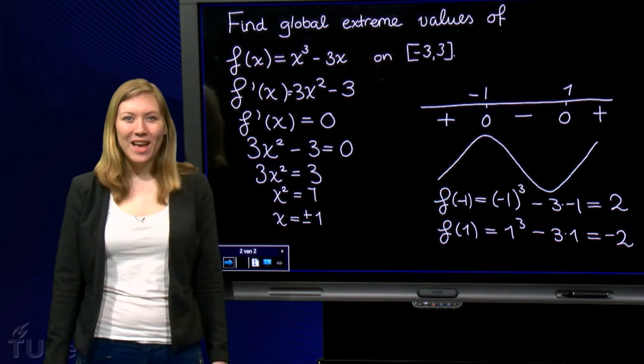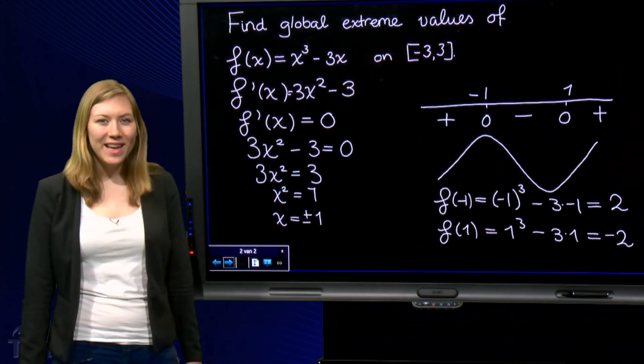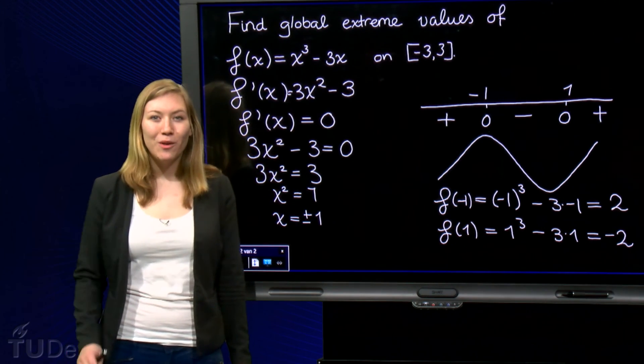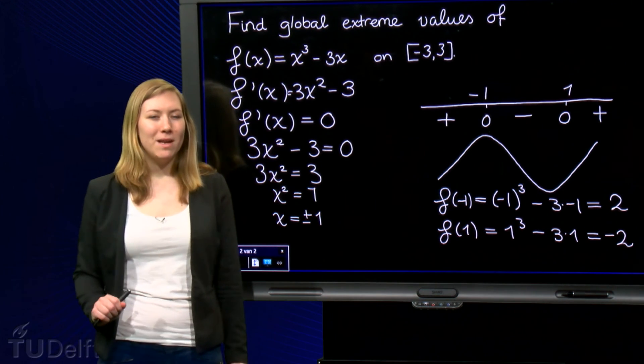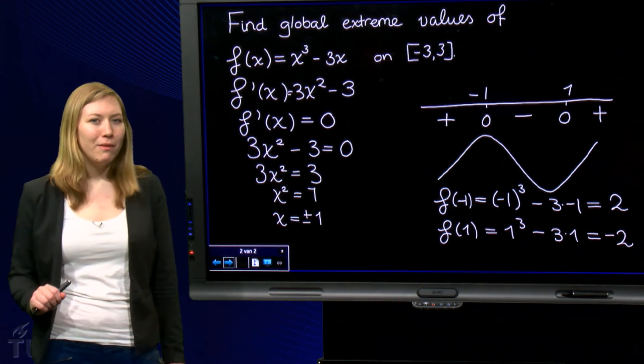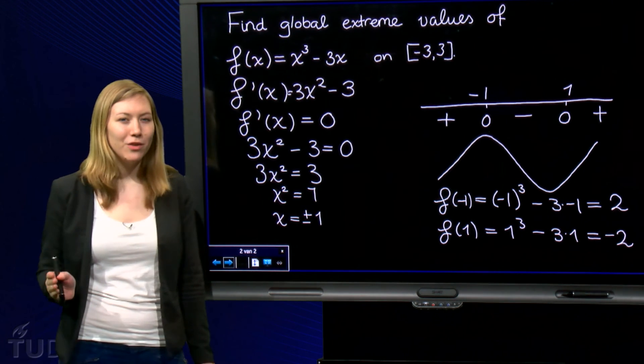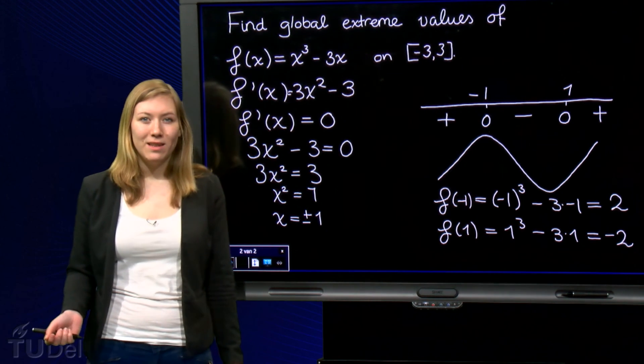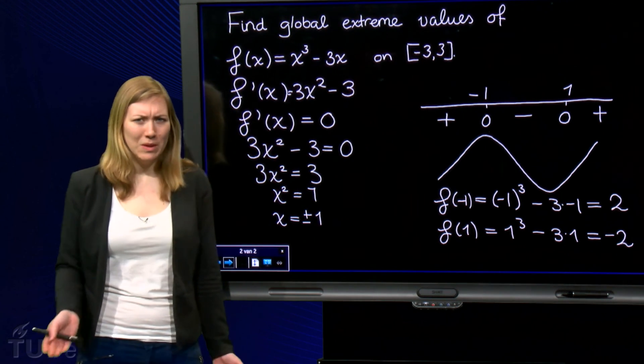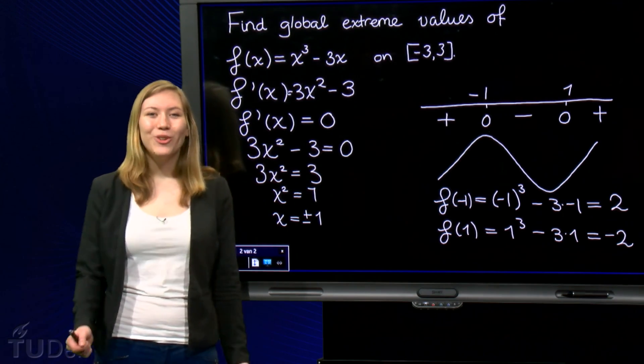So to conclude, f has a global maximum value of 2 at x equals minus 1 and a global minimum value of minus 2 at x equals 1. But the value of f at x equals 3 is equal to 3 cubed minus 3 times 3, which is 27 minus 9, which equals 18. This is a lot larger than 2, so we did something wrong. Can you catch the error?